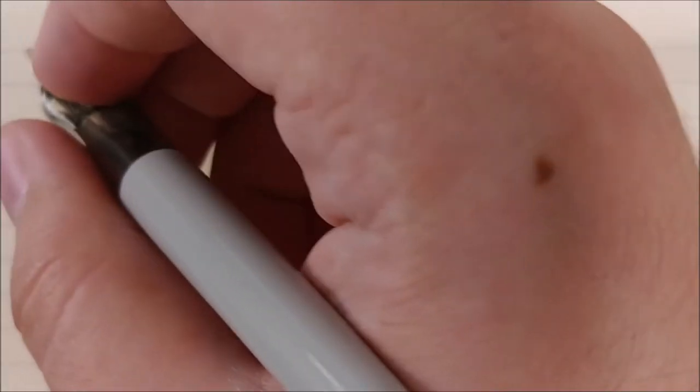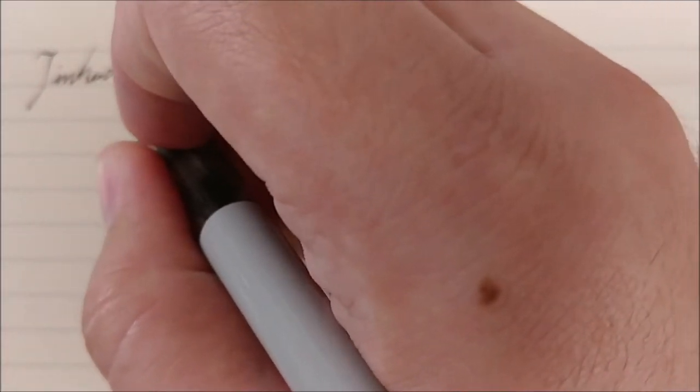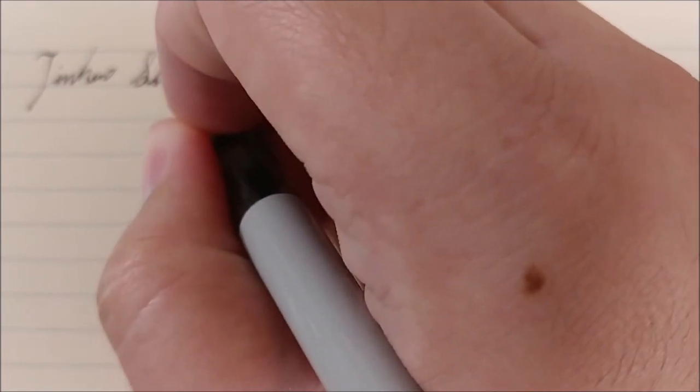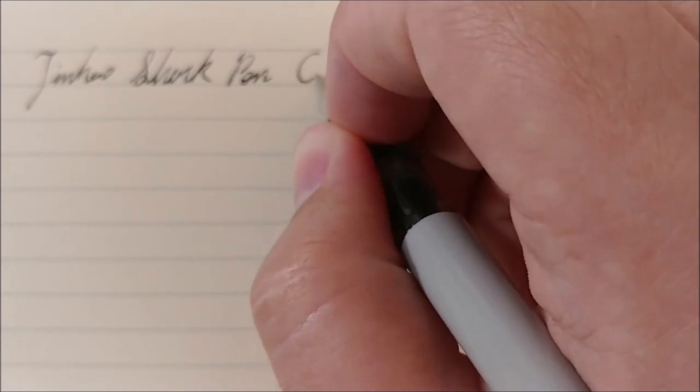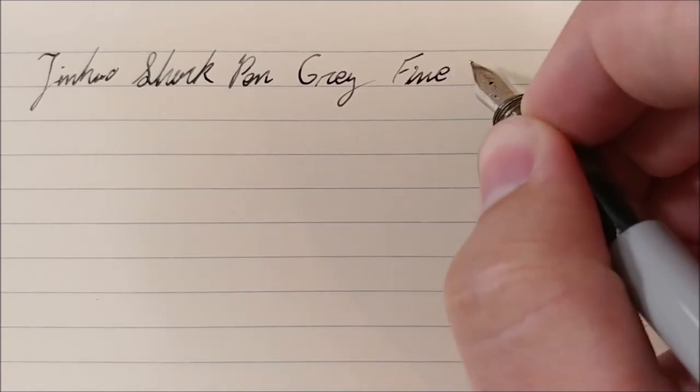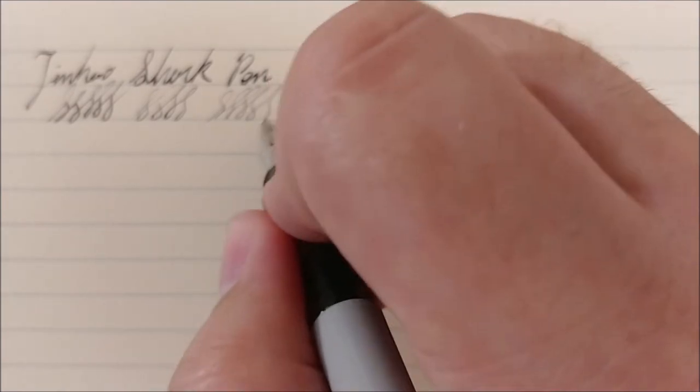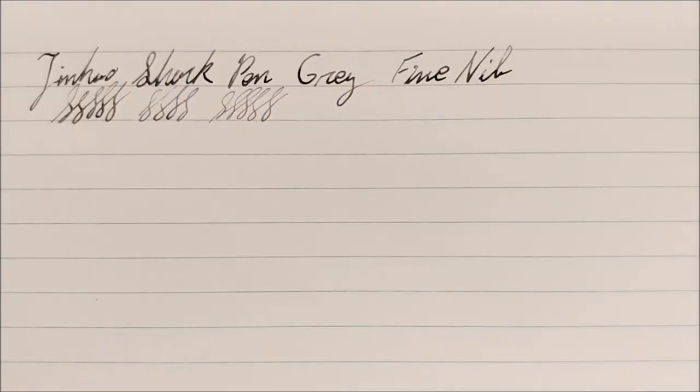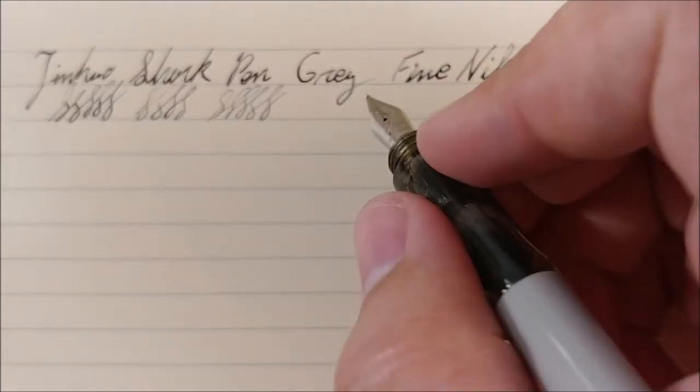All right, onto the writing sample. So first up, we have the Jinhao Shark Pen in gray. And again, these are both fine nibs. Now this is the one that I've tuned a little bit and it writes okay. I still have to bear down a little bit. I'll show you here. I'll just kind of do some, you can see there's a few little skips there. Nothing too bad. I've worked out most of the kinks in this one, but it isn't great.